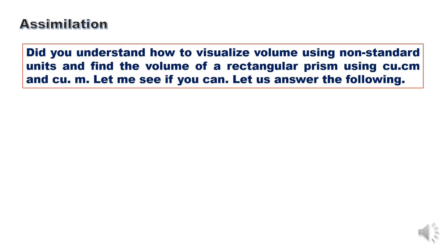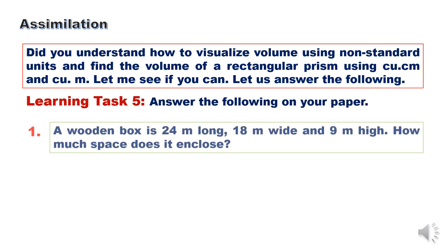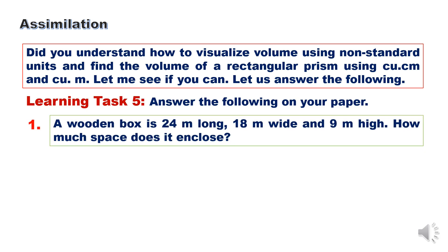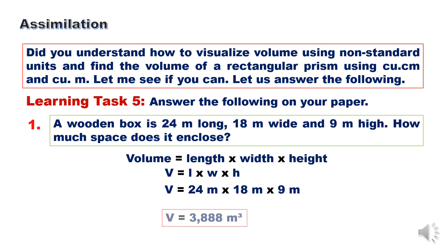Did you understand how to visualize using non-standard units and find the volume of a rectangular prism using cubic centimeters and cubic meters? Let us see if you can answer the following. For Learning Task 5, number 1: A wooden box is 24 meters long, 18 meters wide, and 9 meters high. How much space does it enclose? Using the formula, volume equals length times width times height: multiply 24 meters times 18 meters times 9 meters, so the volume is 3,888 cubic meters.